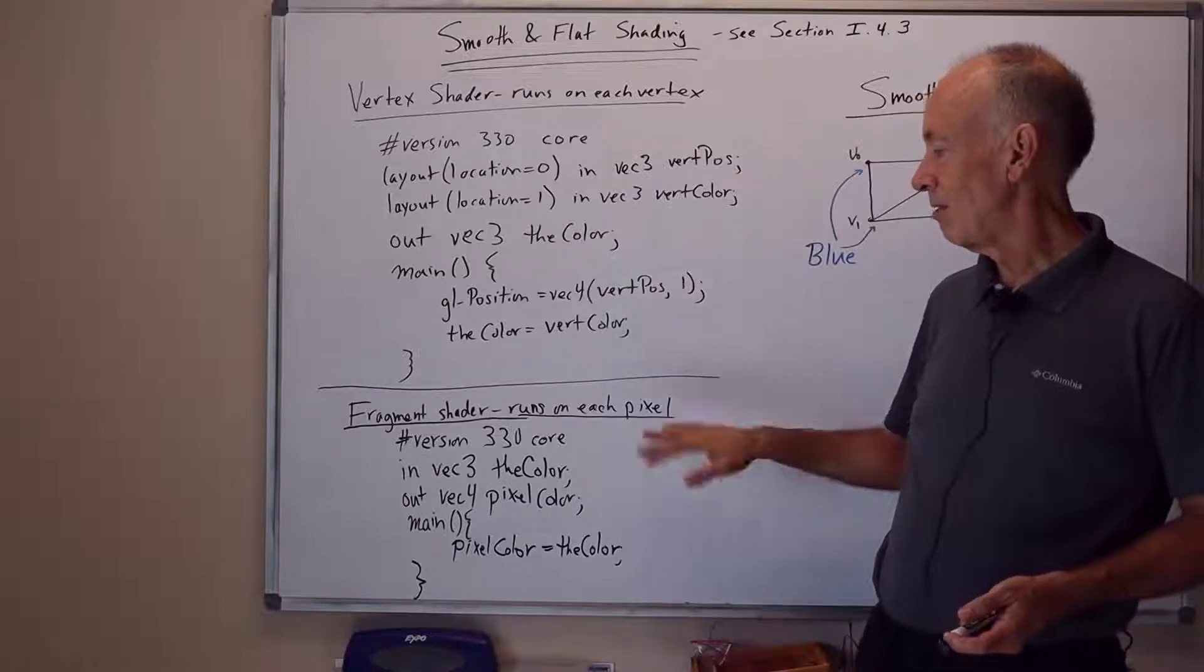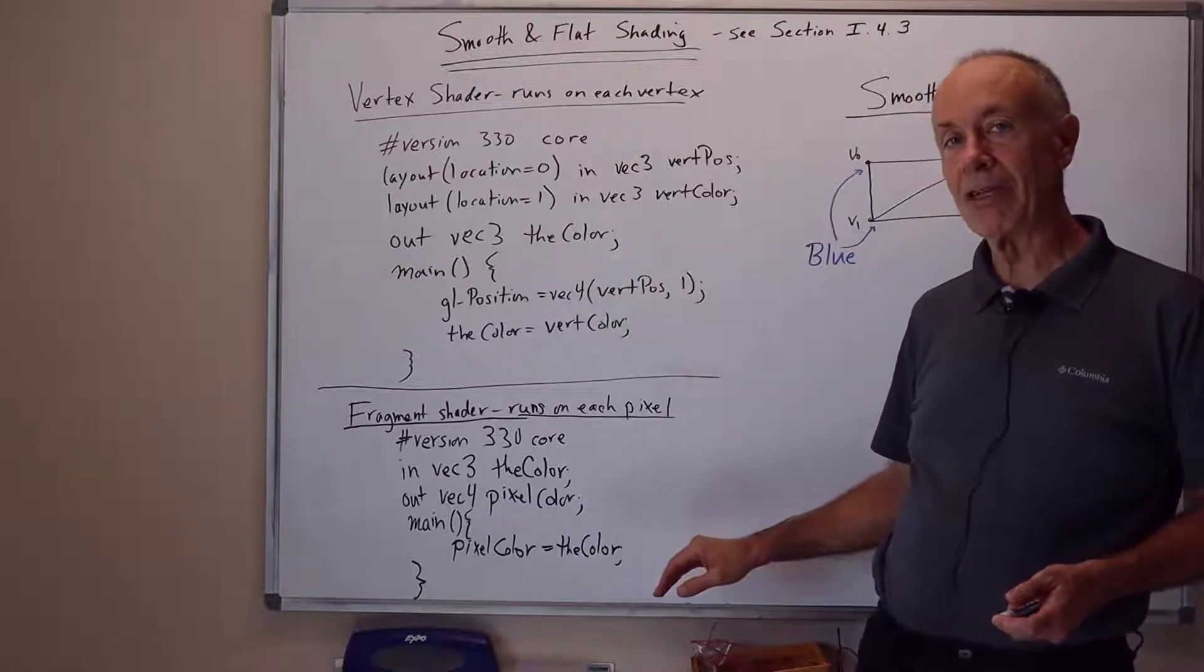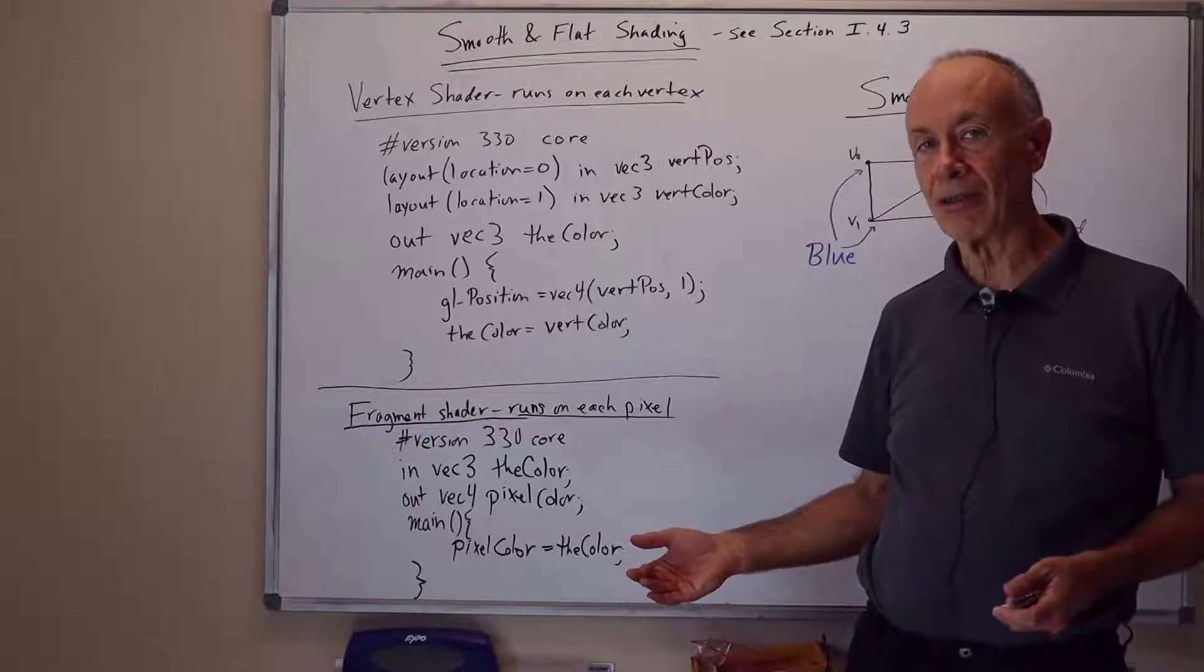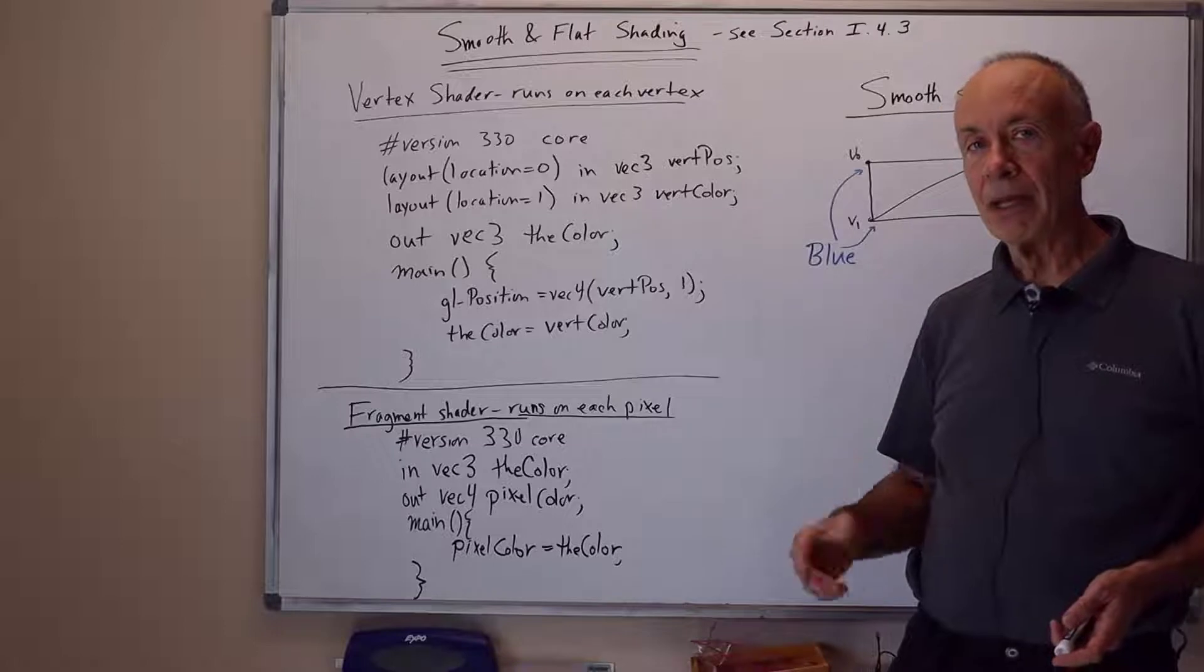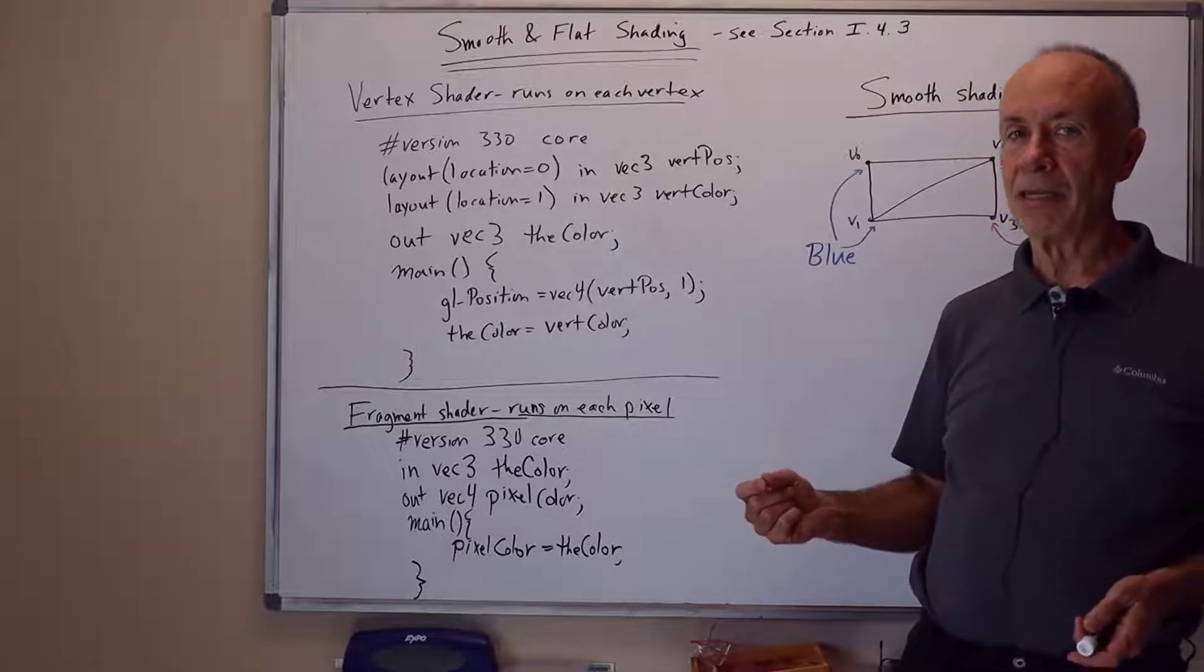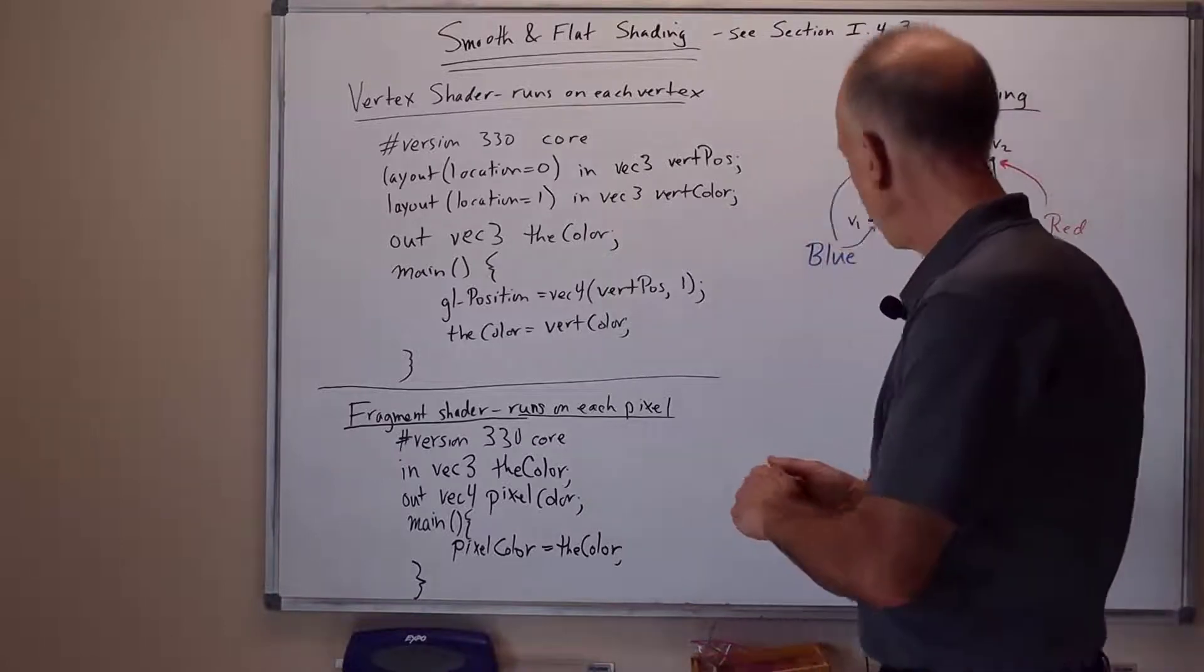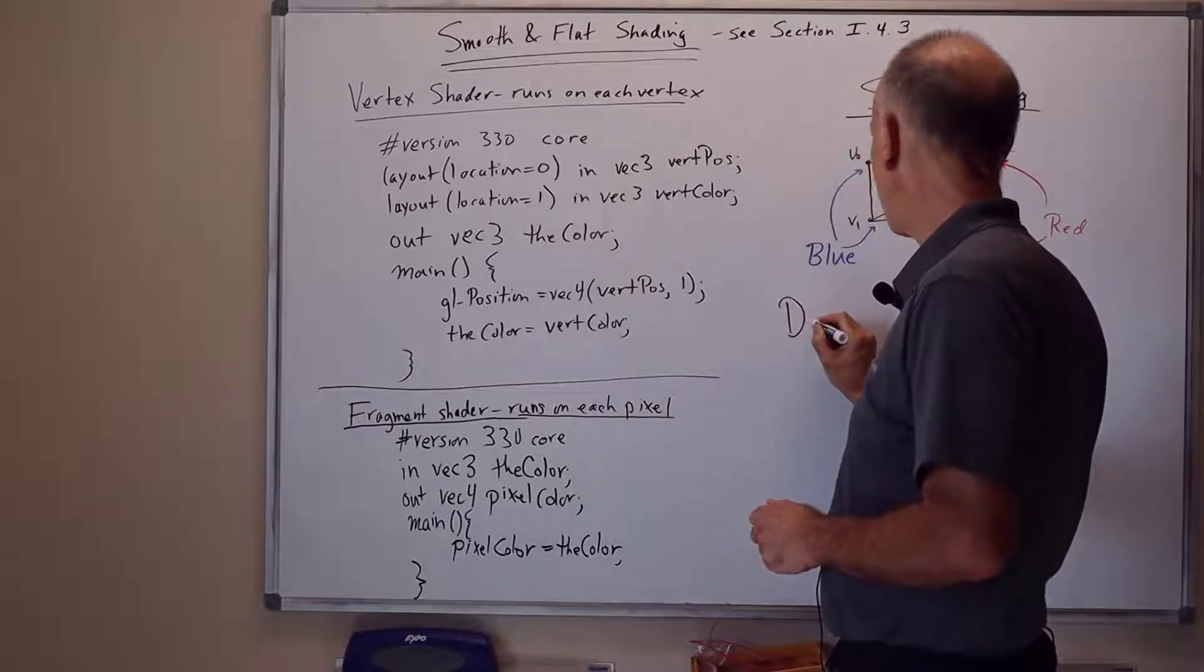All that the fragment shader does is output the color as the color of the pixel on the screen. Since the fragment shader is run separately for each pixel, this gives the possibility of giving each pixel its own color based on some computation. But here we just pass it through. The default mode in OpenGL is smooth shading.